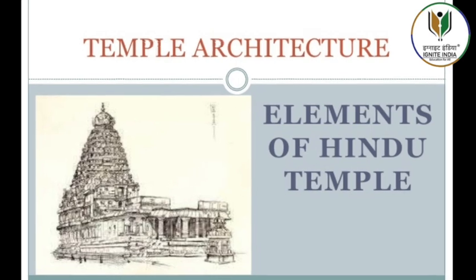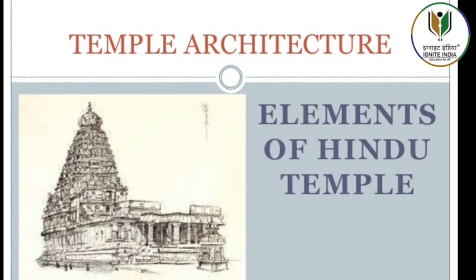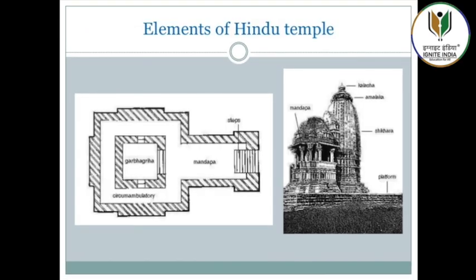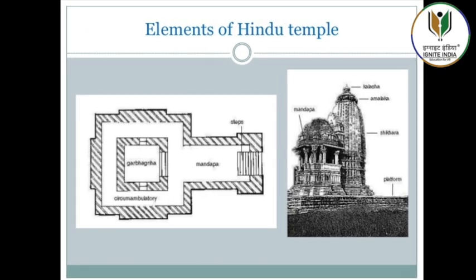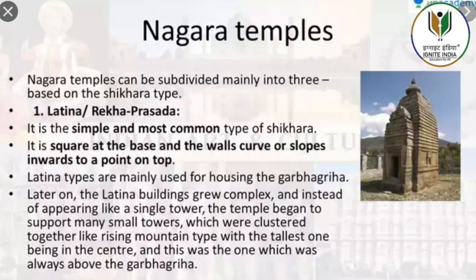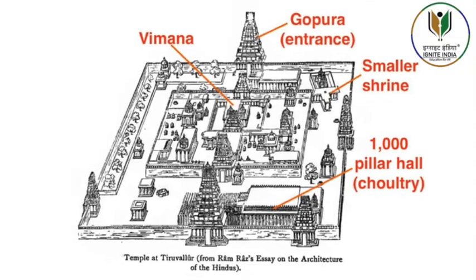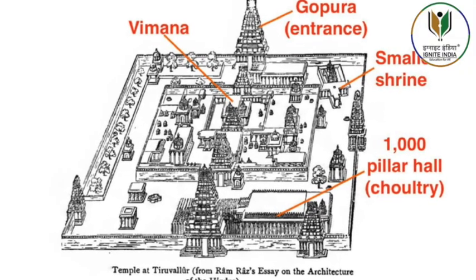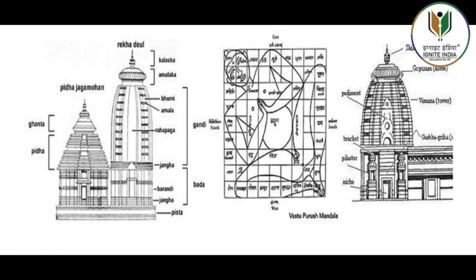Most of the architectural remains that survive from ancient and medieval India are religious in nature. In different parts of the country, distinct architectural styles of temples were the result of geographical, ethnic, and historical diversities.